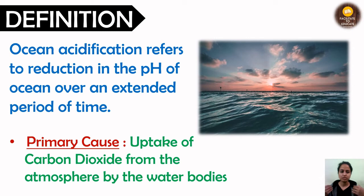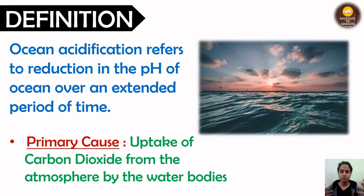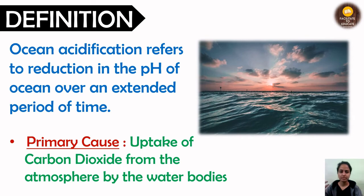This applies to oceans, lakes, ponds, or any water body that is taking up carbon dioxide from the atmosphere — it will cause acidification in that water body. Now let's see how it happens by looking at the chemical reactions occurring in the ocean. But first, let us see what pH is.